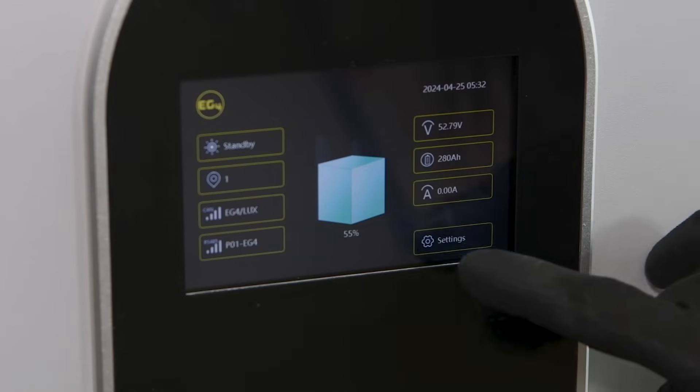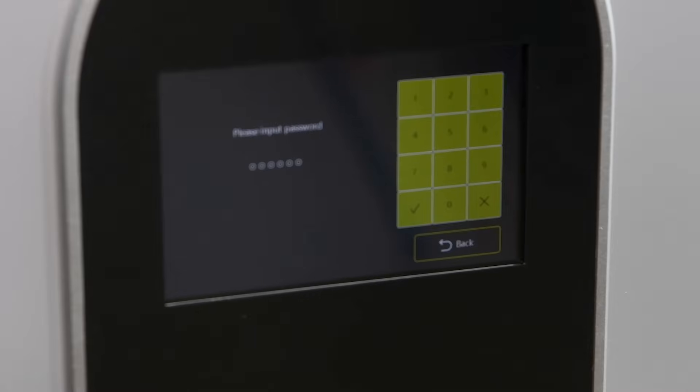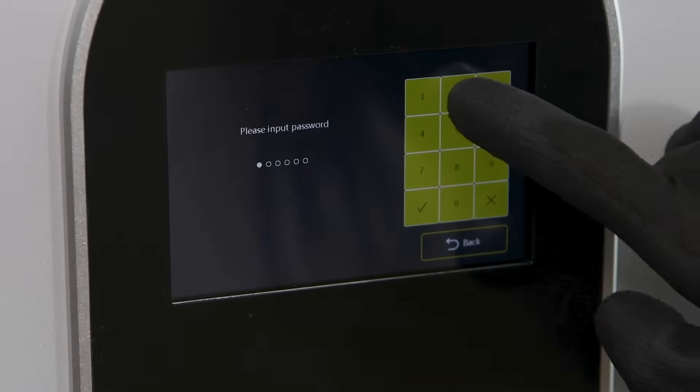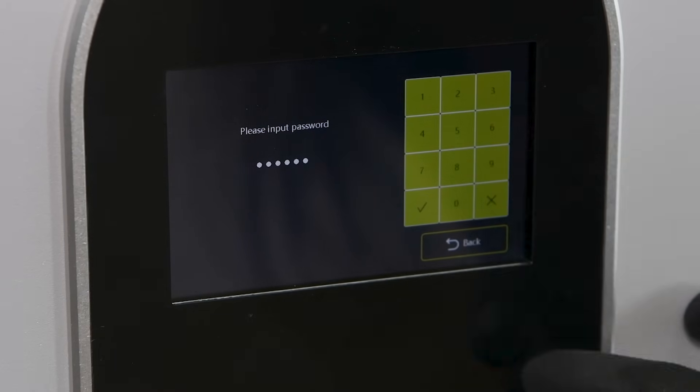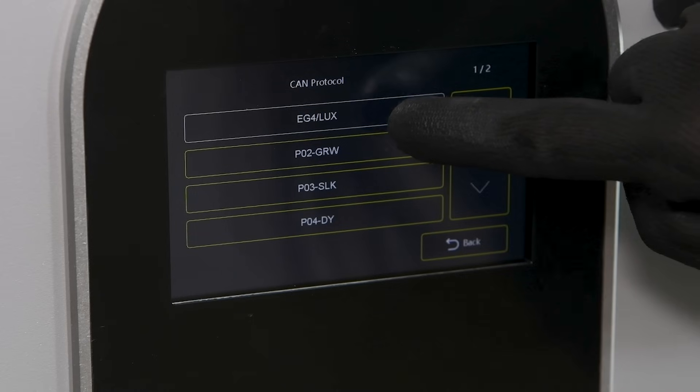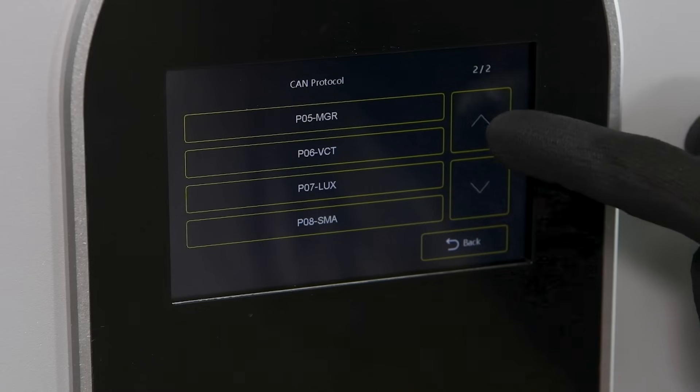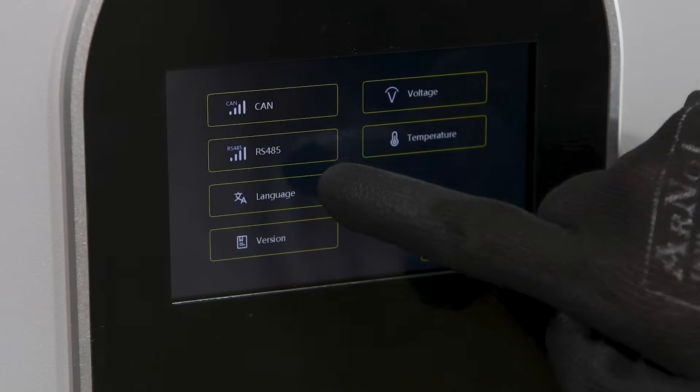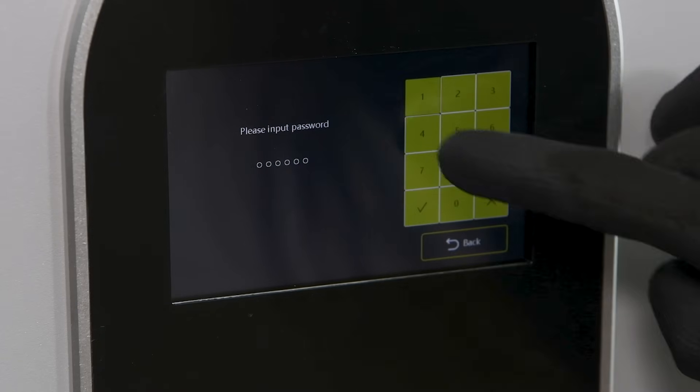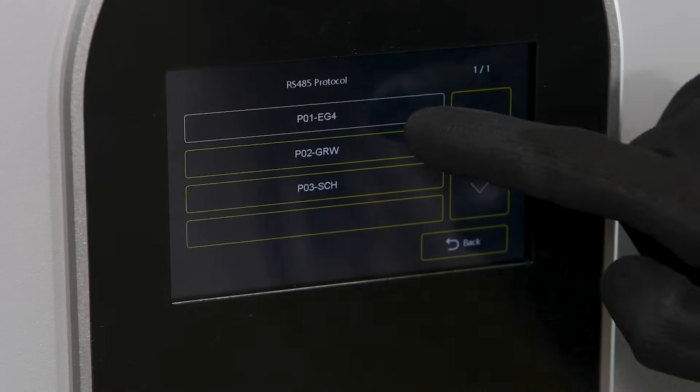If we click on the settings screen, we have a whole lot more options. We can go into the CAN settings, and the password for CAN and RS-485 is always 123456. Oh, there's our protocol. We have a 6000 XP, which is the EG4 Luxe, so we'll select EG4 Luxe, but you can see we have many more. We can scroll up or down. We'll click back. If we wanted to set RS-485, we could set that here, and again, the password would be 123456. Hit the check mark, and again, we have EG4, Growatt, or Schneider. We have EG4, so we would select that and click the back arrow.